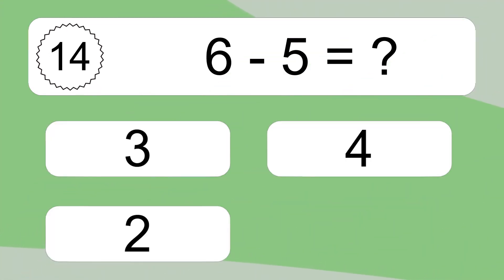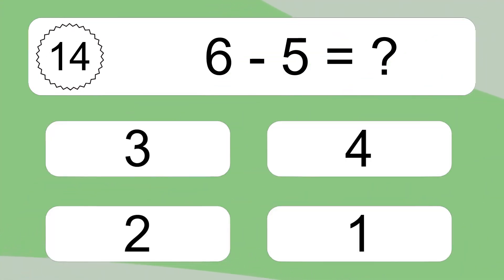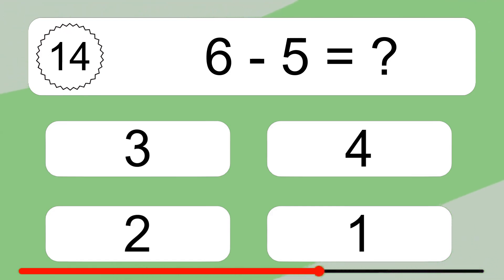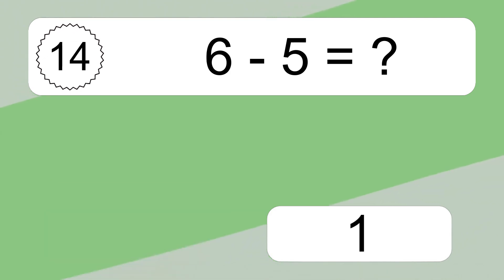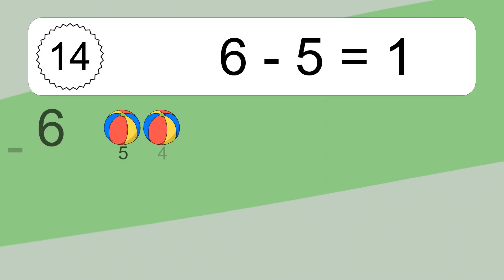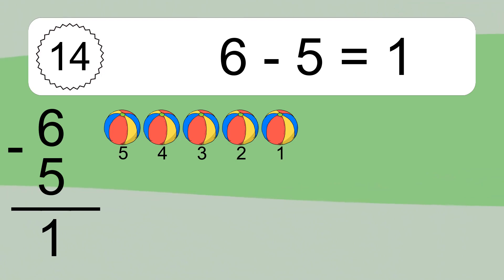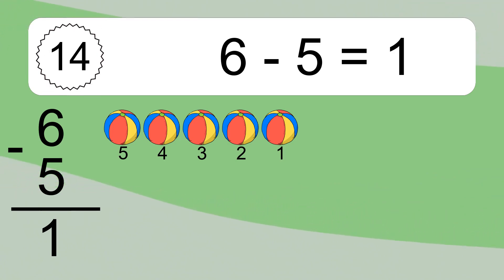6 minus 5 equals what? 6 minus 5 equals 1. Let's count it. 5, 4, 3, 2, 1.